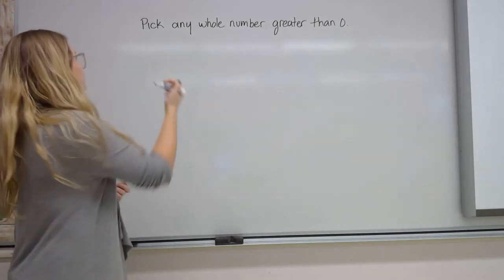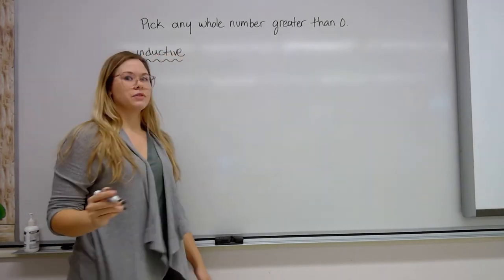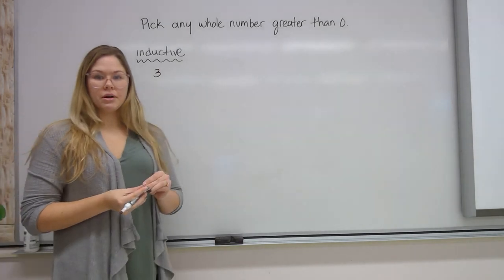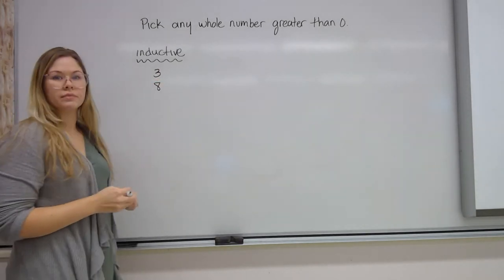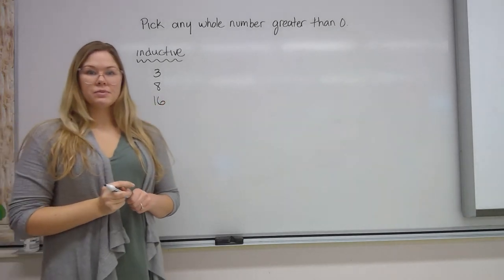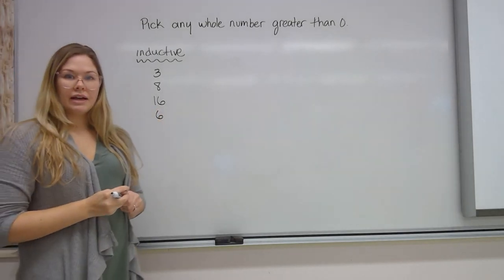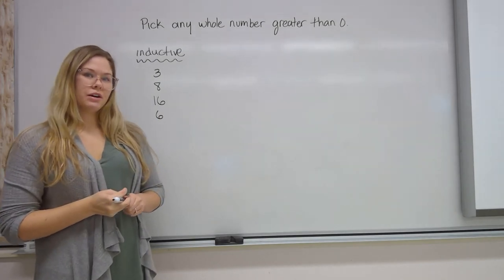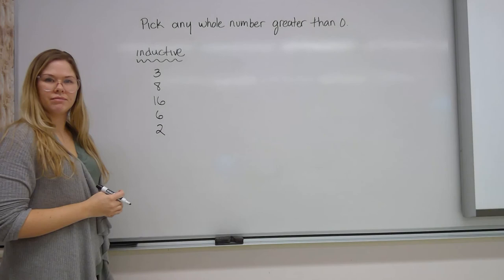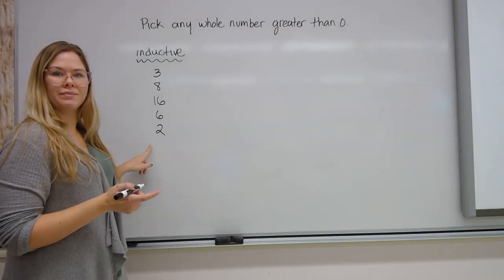Let's use inductive reasoning. We're going to pick a specific number — let's start with 3. I wanted you to add 5, so 3 plus 5 gives us 8. Next, multiply by 2 which gives us 16. Then subtract 10: 16 minus 10 gives me 6. Last, divide by the original number: 6 divided by 3 equals 2. Inductive reasoning works for this specific example — I started with 3 and it ends with 2.